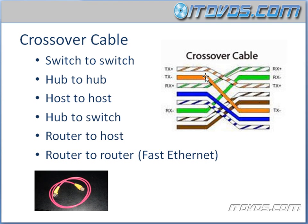We'll recap the three cable types shortly — they're actually pretty easy to remember and we don't necessarily need to memorize the exact wire order. We're going to use a crossover cable when connecting a switch to a switch, a hub to a hub, a host to a host, a hub to a switch, a router to a host, or a router to a router. Think of it as using a crossover cable when connecting like devices. When connecting devices that would normally connect to each other — like a host to a switch — use a straight-through cable. It's important to know which cable type to use for which connection.